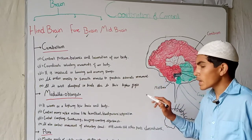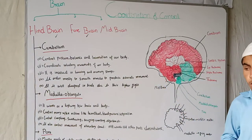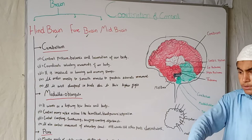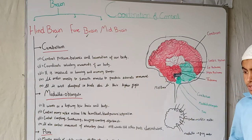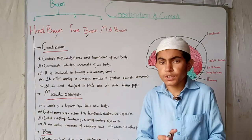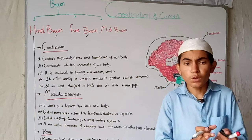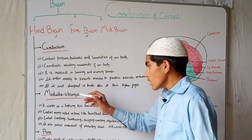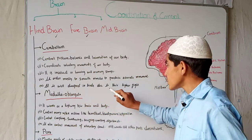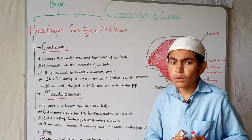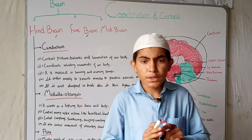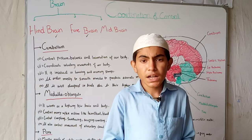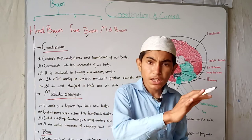The cerebellum orders the smooth muscles to produce correct movement. The small muscles of our hands, limbs, and legs are smooth muscles, and the cerebellum directs them to move. The cerebellum is well developed in birds because they fly at great heights, so it is highly developed in them.